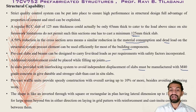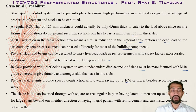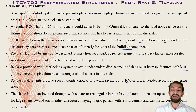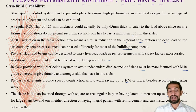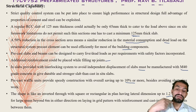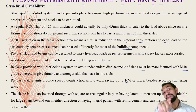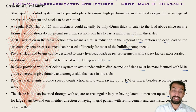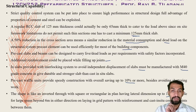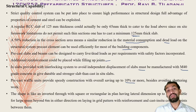Precast waffle units provide speedy construction with overall savings of up to 10 percent or more, besides avoiding shuttering work. The shape is like an inverted trough, square or rectangular in plan, having a lateral dimension up to 1.2 meters, suitable for large panels beyond 6 meters in either direction, lying in a grid pattern with reinforcement and cast-in-situ concrete joints between them.